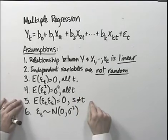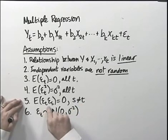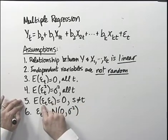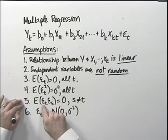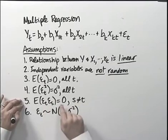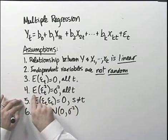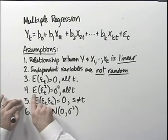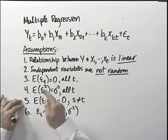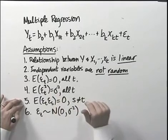The fifth assumption is also very important. It tells us there is no correlation between different error terms. So the expected value of epsilon t times epsilon s, where s is not equal to t, is equal to zero. When s equals t, we get assumption four: the expected value of epsilon t squared is equal to sigma squared for all t, which includes s.